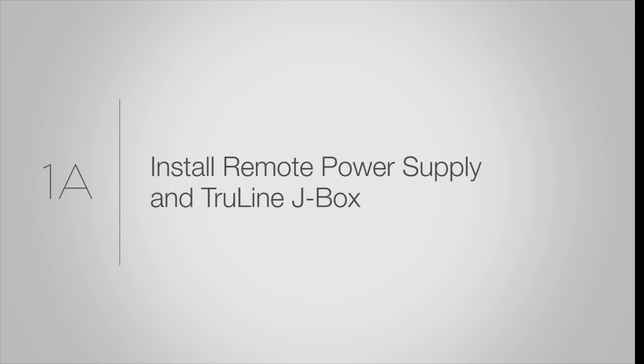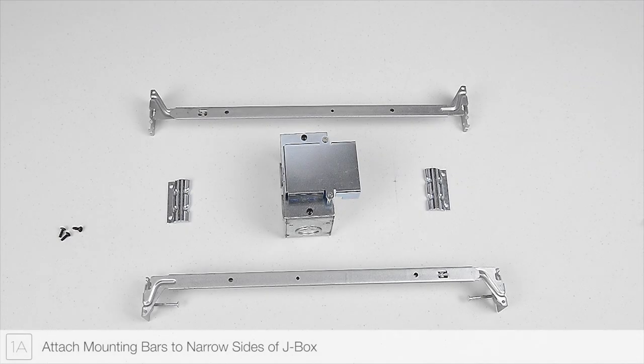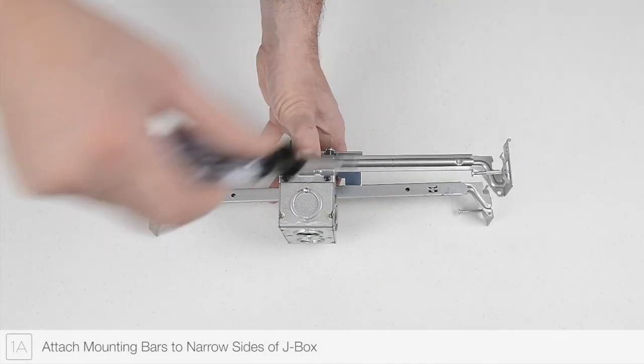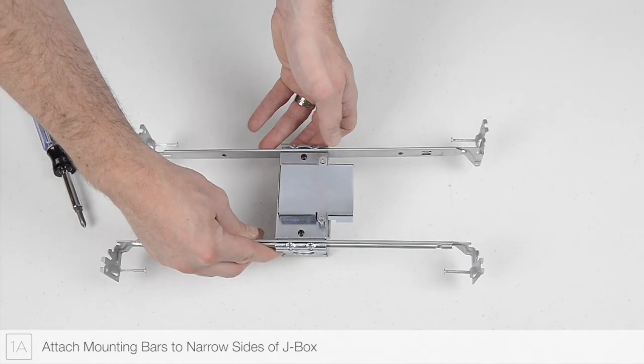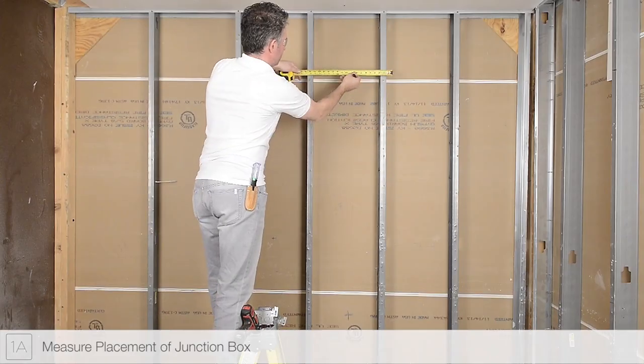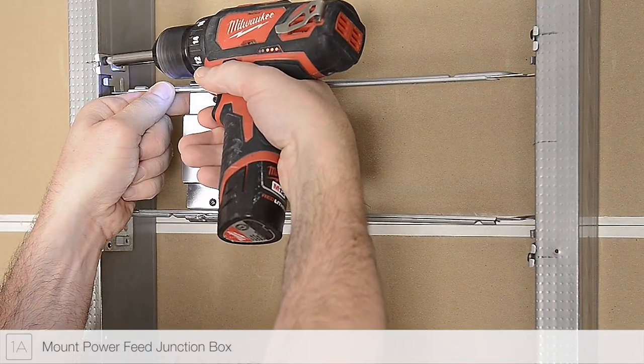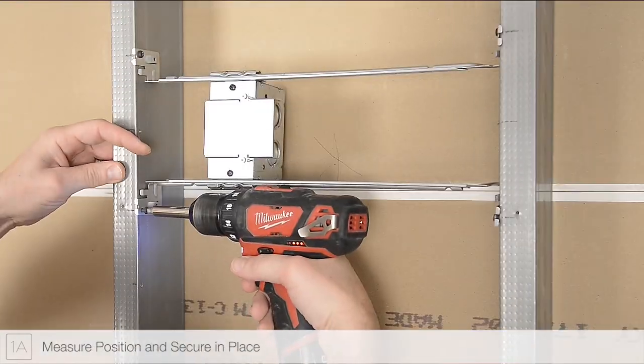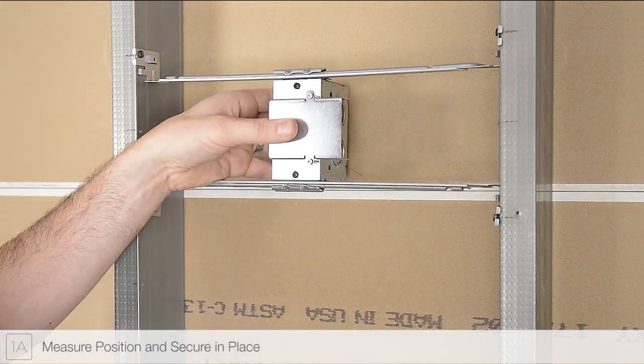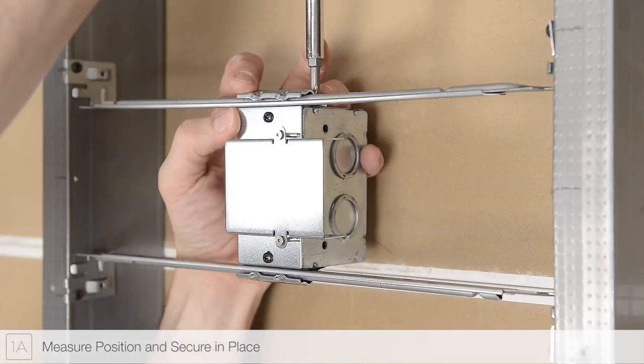Step 1A: Attach the supplied mounting bars to the sides of the junction box as shown. Measure and mark the placement of the junction box. Mount the junction box to the studs. Adjust the junction box to match the marked position and secure in place.